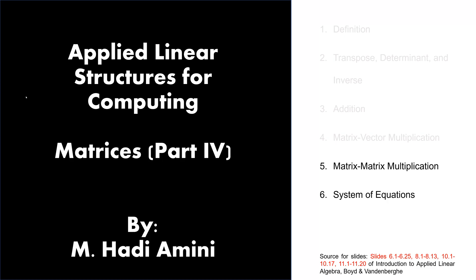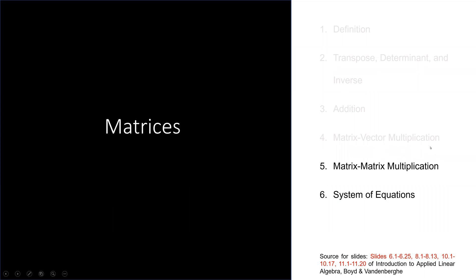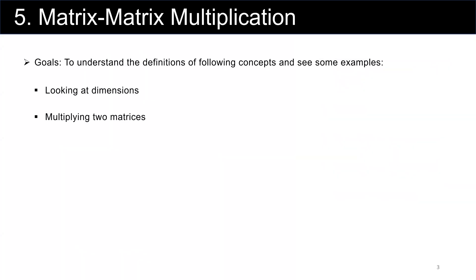This is part four of matrices. In this part, we are going to talk about matrix multiplication. The goal is to understand how to multiply two matrices and what the properties of matrix multiplication are.